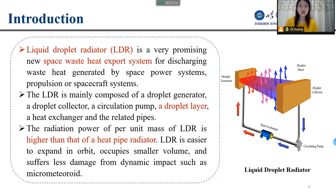The liquid droplet radiator is a very promising new space waste heat export system. Its main components are a droplet generator, a droplet collector, circulation pipes, a droplet layer, a heat exchanger, and related pipes. Compared with heat pipe radiators, the radiation power per unit mass of the liquid droplet radiator is higher, it is easier to expand in orbit, occupies small volumes, and suffers less damage from dynamic impact.